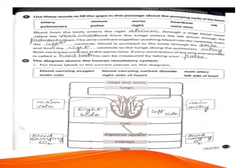Now question number 3. Use these words to fill the gaps in the passage about the pumping cycle of the heart. Blood from the body enters the right atrium through the large blood vessels called the vena cava. Blood from the lungs enters the left atrium through the pulmonary vein. The atria contract together, pushing blood into the ventricles.